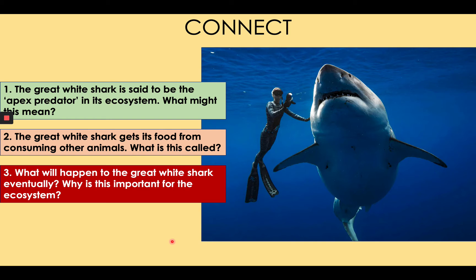Three: what will happen to the great white shark eventually, as happens to every living organism, and why is this important for the ecosystem? Like every living creature, the great white shark will die eventually. When it dies, its body will sink to the bottom of the ocean, where it will decompose due to the decomposers in the water and on the seabed. This will allow its nutrients to be spread around the ocean, providing nutrients for the plants — the producers. This allows the nutrient cycle to happen. If any of you have watched The Lion King, you'll have heard Mufasa talk about the circle of life. The nutrient cycle is very much the real thing of the circle of life, and this lesson I'm going to show you what I mean.